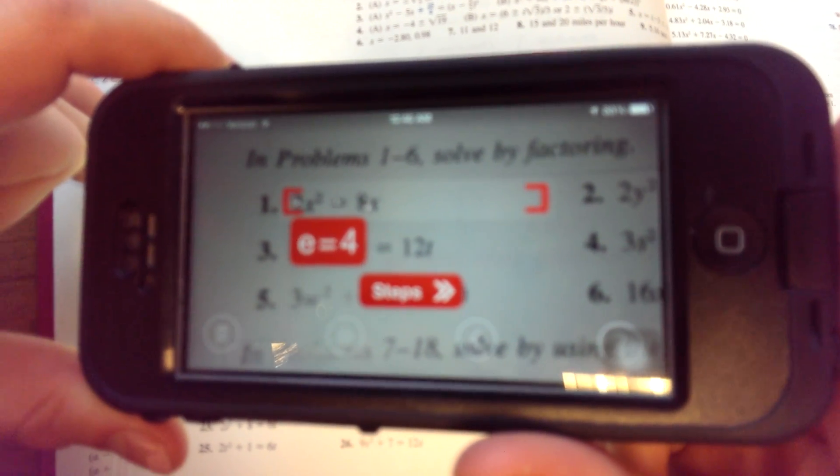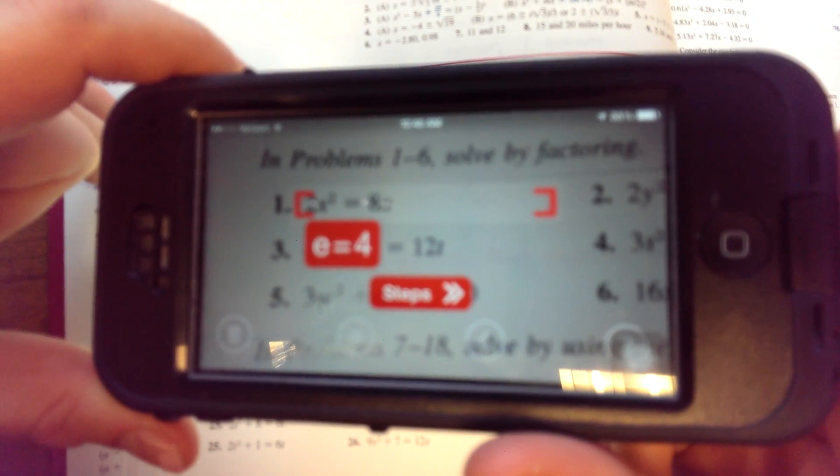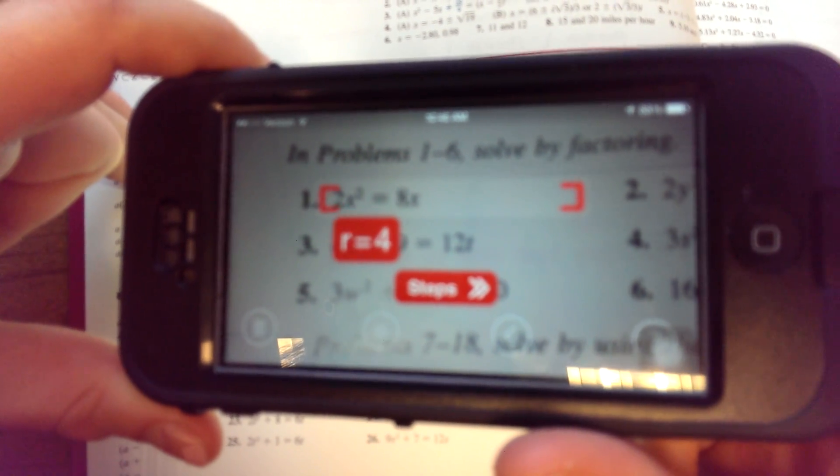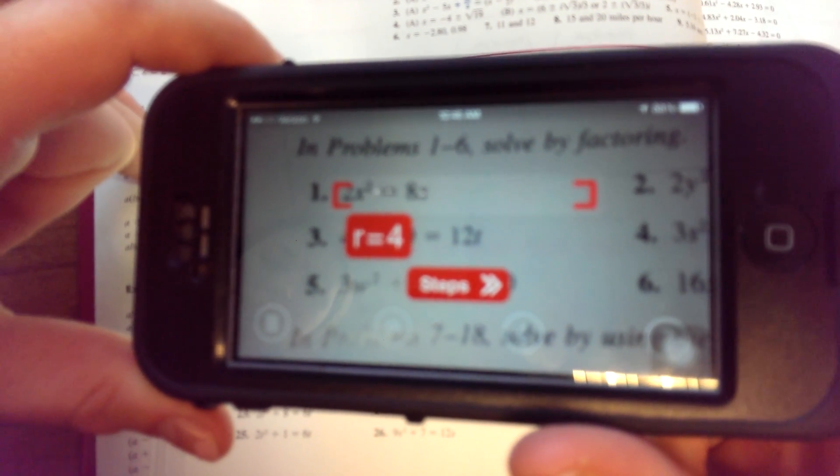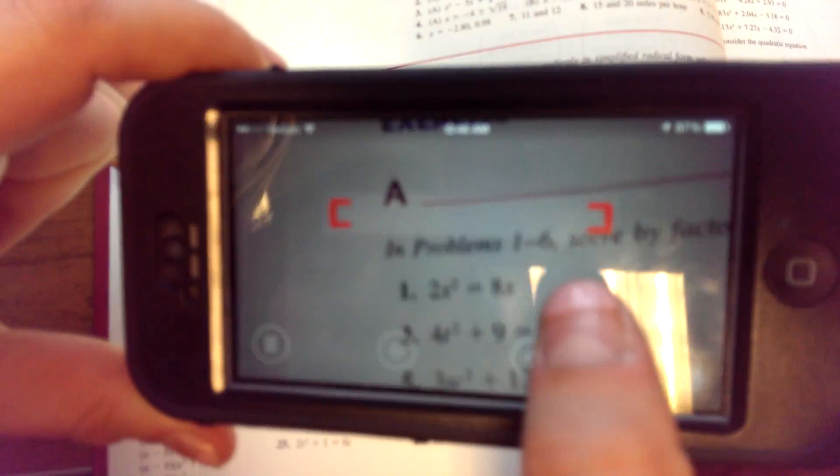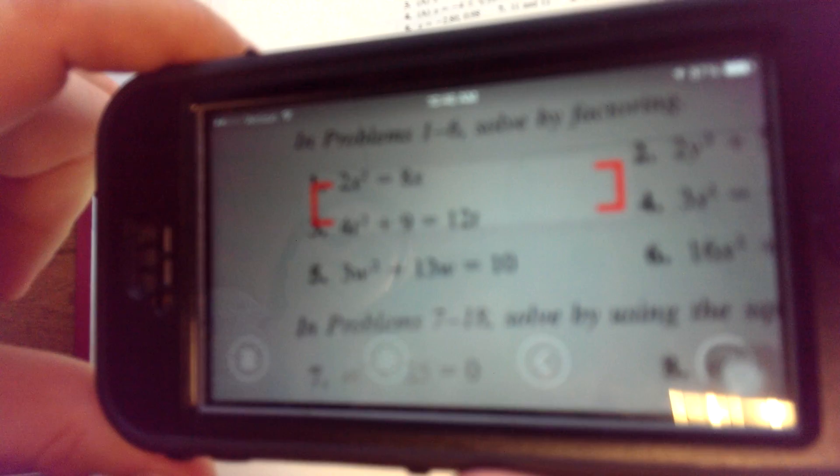R equals 4... E equals 4. R equals 4. E equals 4. R equals 4. Is that right? 4x. Okay. Let's be a little bigger.